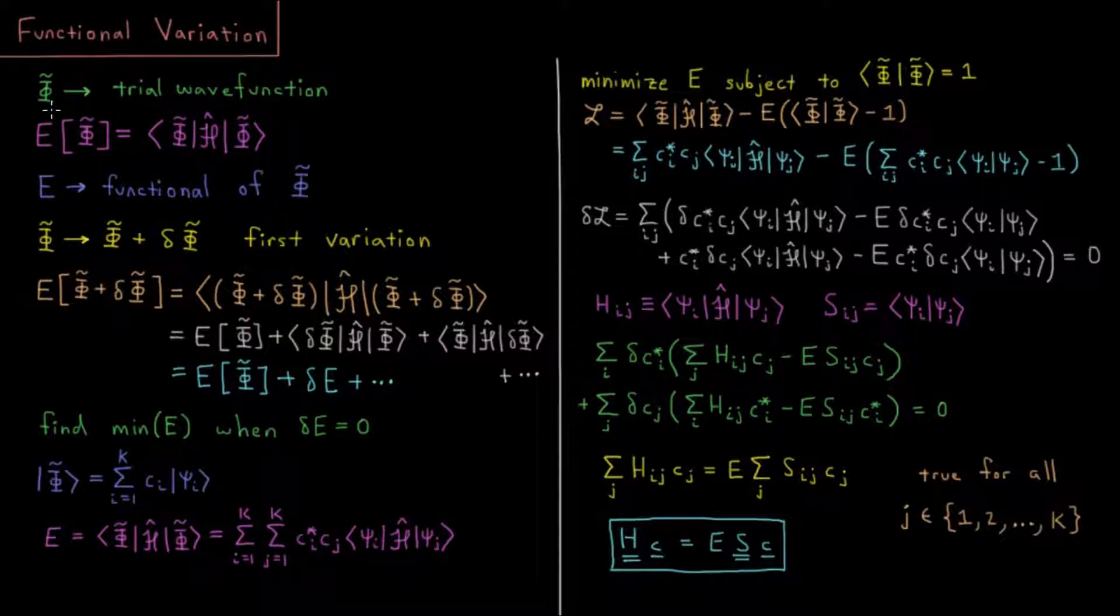Let's imagine that we start off with some trial wave function, I might call this capital phi tilde. Our energy is actually a functional of this trial wave function, meaning it depends on what the value of it is in all coordinates at all times.